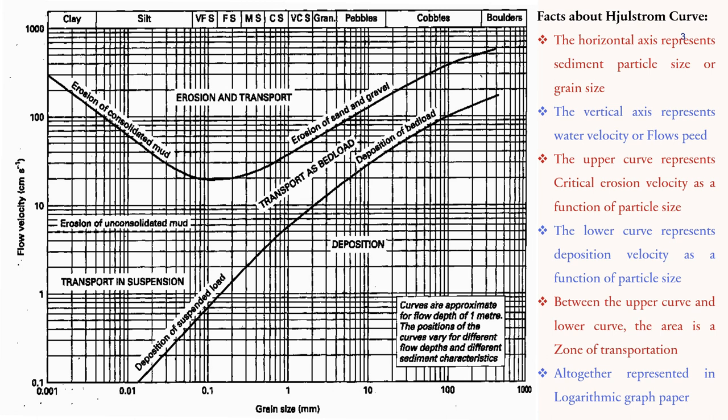Between the upper curve and the lower curve, the area is called the zone of transportation. The whole graph is plotted on logarithmic graph paper. This is the Hulström curve.